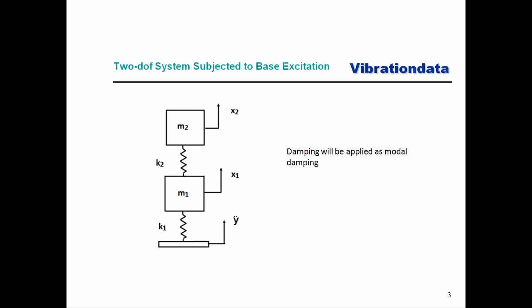Today we get to graduate and go on to the next level. Here we have a two degree of freedom system with two masses, M1 and M2, and two springs, K1 and K2. We have the absolute displacement of each of the two masses and the absolute acceleration of the base. You'll notice there are no damper elements in this diagram — instead we're going to apply damping as modal damping.